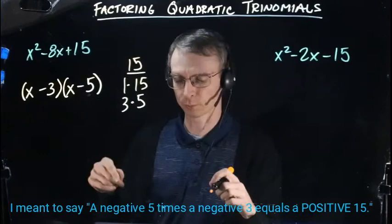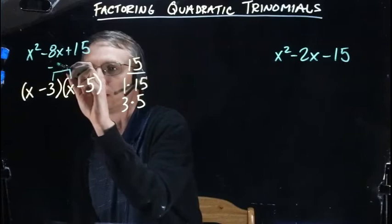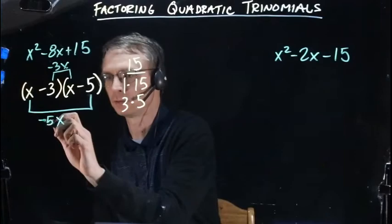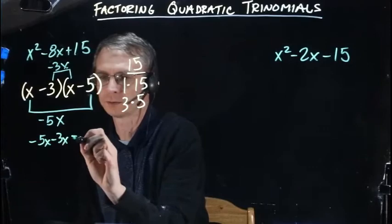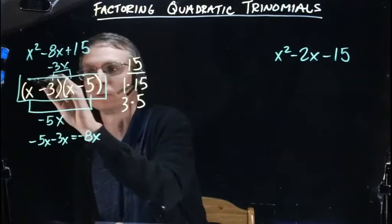To get that negative 8x, we multiply the inside terms: negative 3 times x is negative 3x. Then multiply the outside terms: x times negative 5 is negative 5x. Adding those together: negative 5x minus 3x equals negative 8x. That's what we were looking for, so this is our factored form.